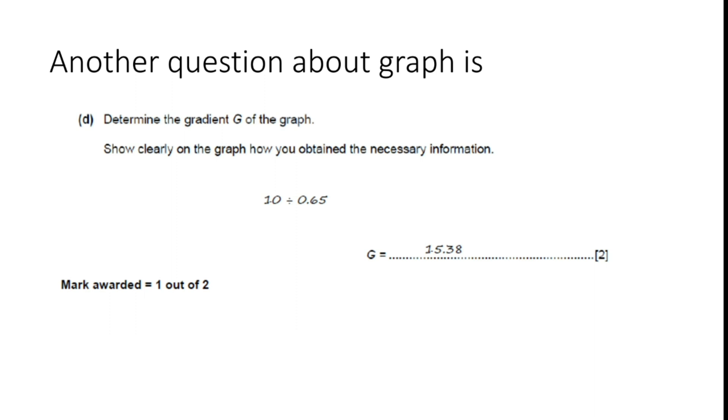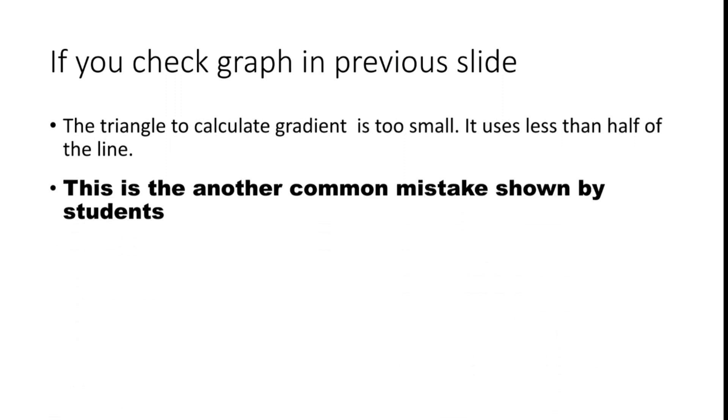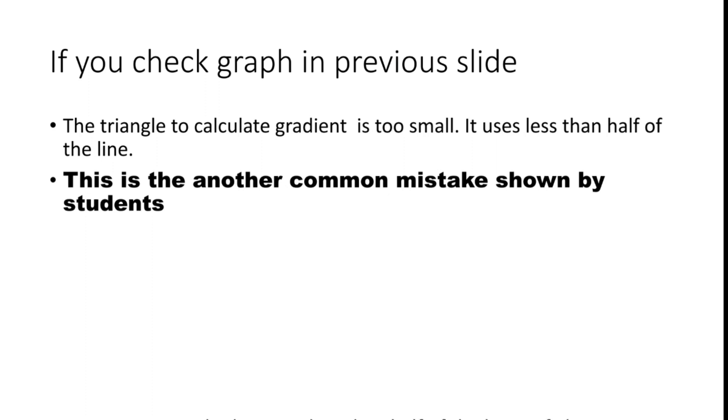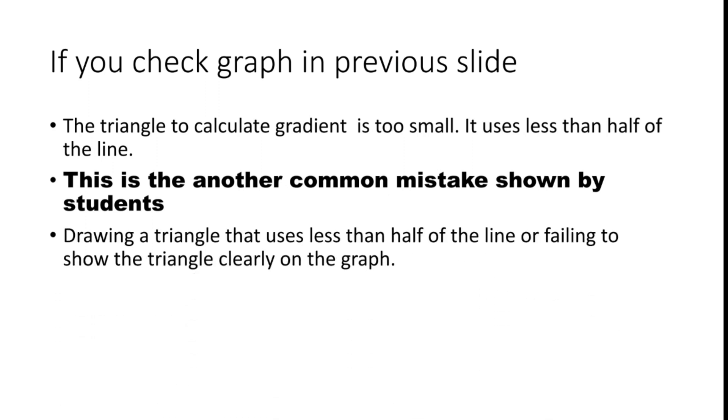If you check the graph in the previous slide, the triangle to calculate gradient is too small. It uses less than half of the line, so that's the mistake. This is another common mistake shown by students: drawing a triangle that uses less than half of the line or failing to show the triangle clearly on the graph.